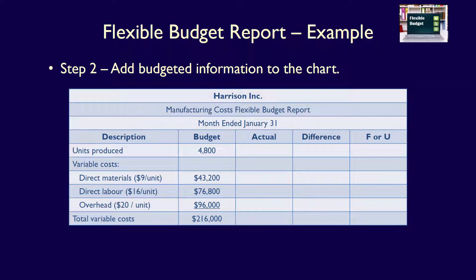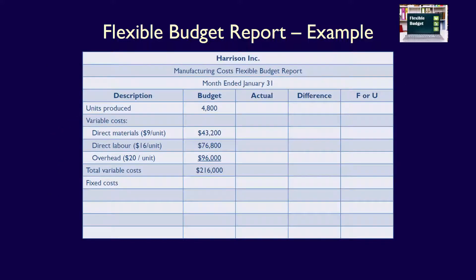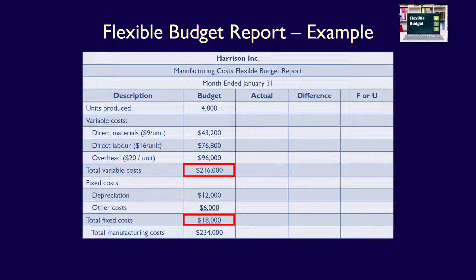We can now add the monthly budgeted fixed manufacturing overhead: depreciation of $12,000 and other fixed costs of $6,000, for a total fixed cost of $18,000. We then calculate the total manufacturing costs of $234,000, which is the total variable costs of $216,000 plus the total fixed costs of $18,000.